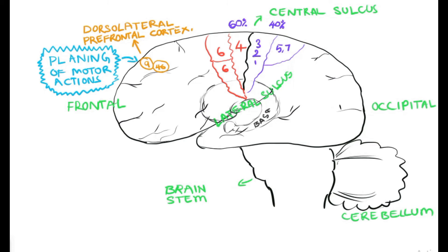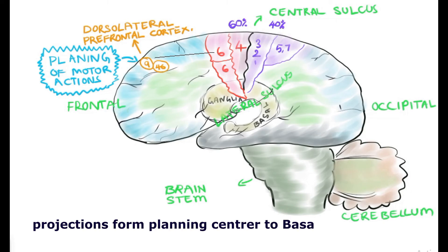From there, the fibers go down to the basal ganglia. Basal ganglia is the collective nuclei of the subcortical structure involving in the planning and programming of the motor action, and also cerebellum.